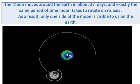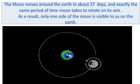The Moon is rotating on its axis as well as revolving around the Earth at the same time, but we are only able to see the front portion of the Moon. We can never see the back portion of the Moon. We can see only 59 percent of the total surface of the Moon.